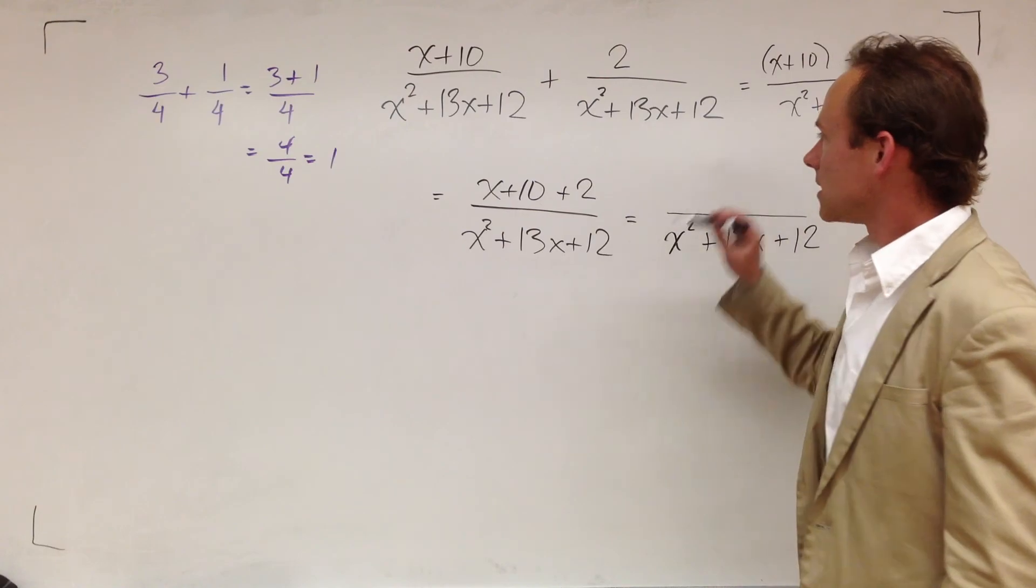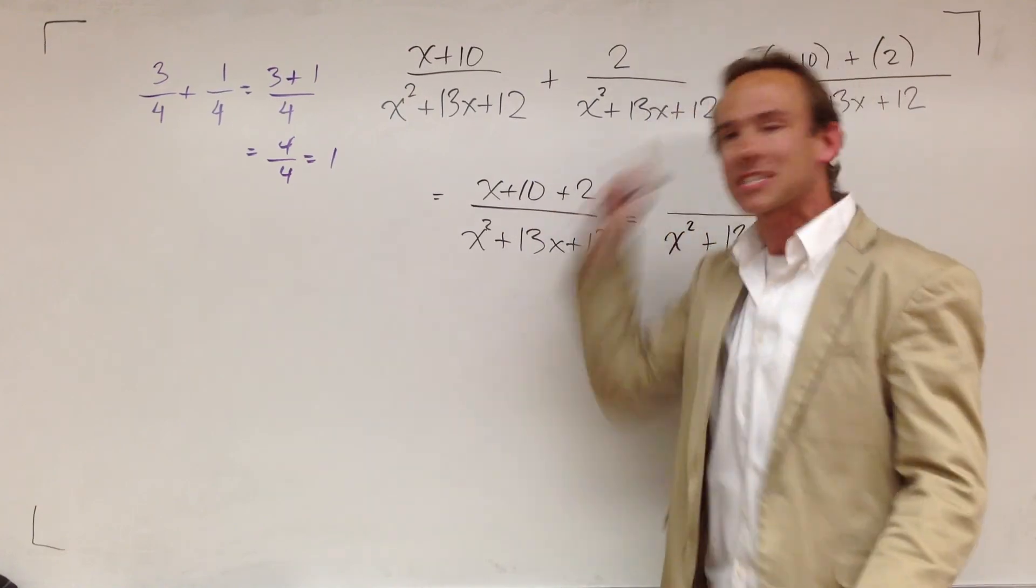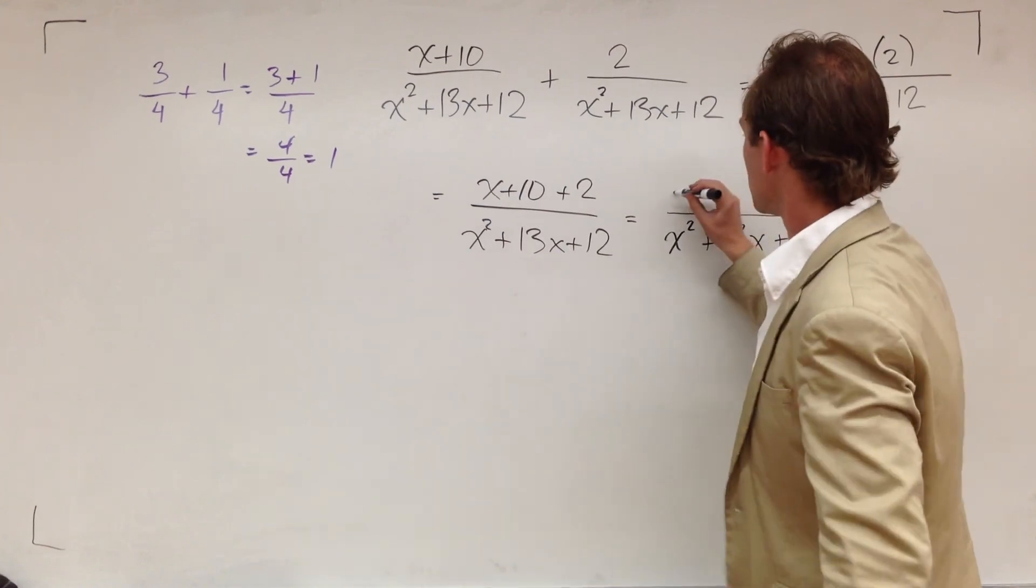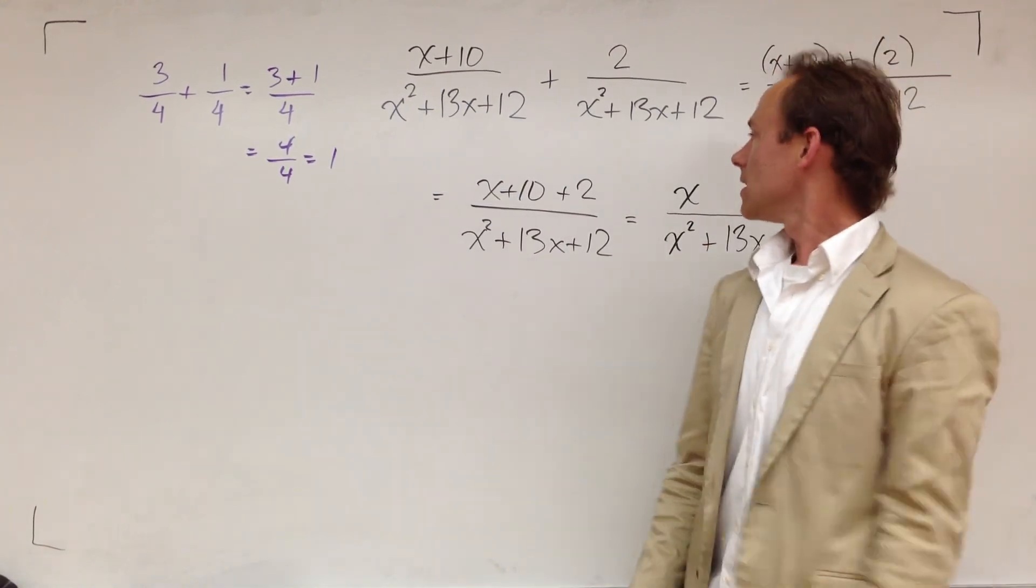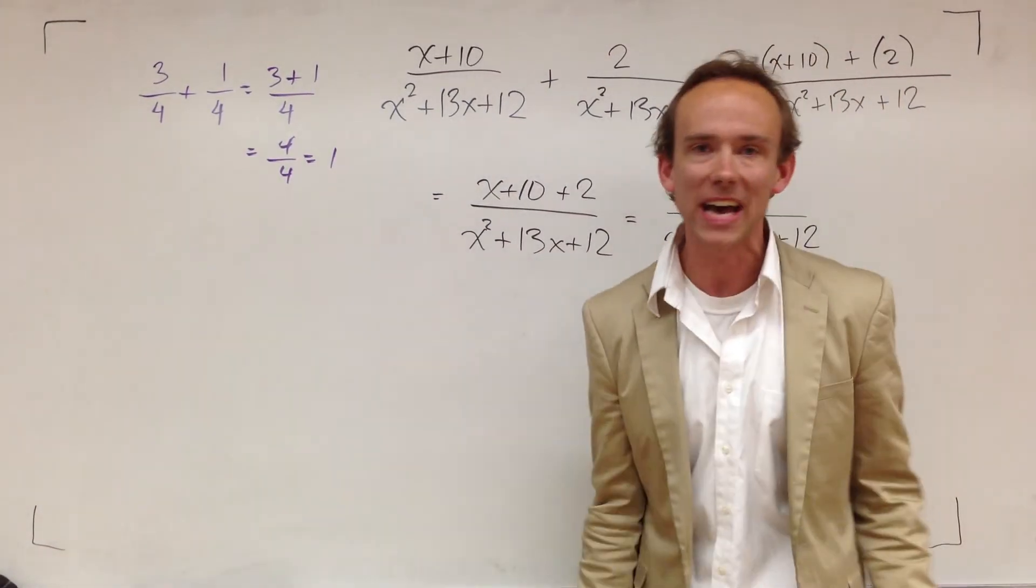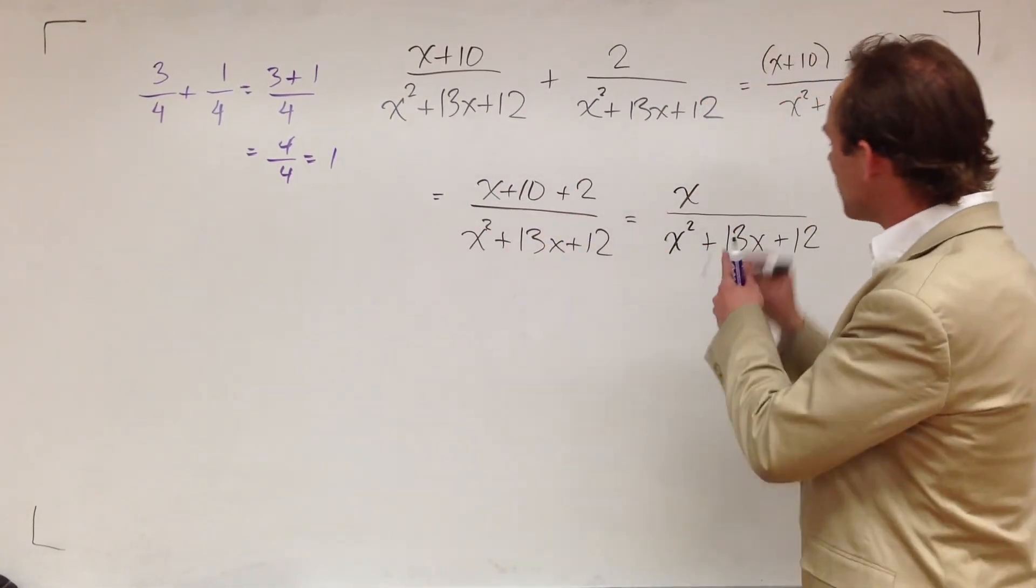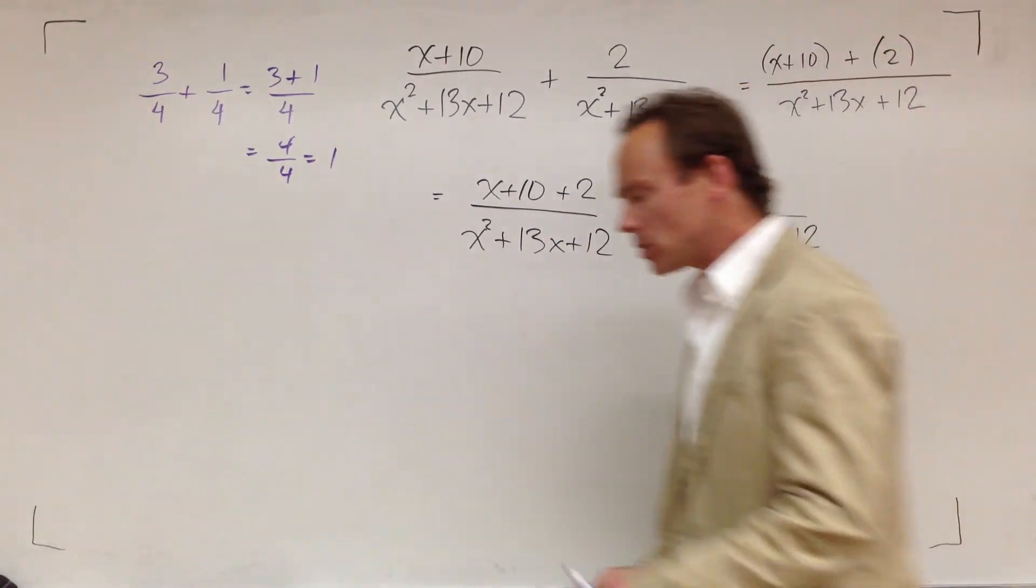I'm going to rewrite it because I'm not concerned about it right now. I'm on this step. And I'm combining like terms. There's no other x's, so I'm just going to write an x. Now I'm no longer concerned with x's, I'm just concerned with the integers. I got a 10 and a 2. I'm going to add them and become 12.